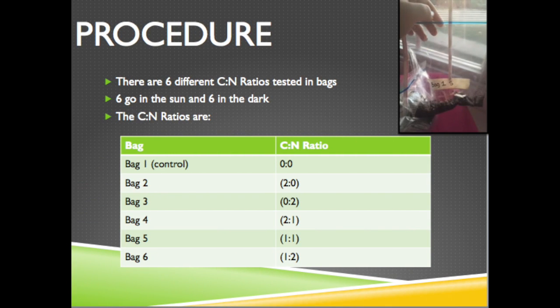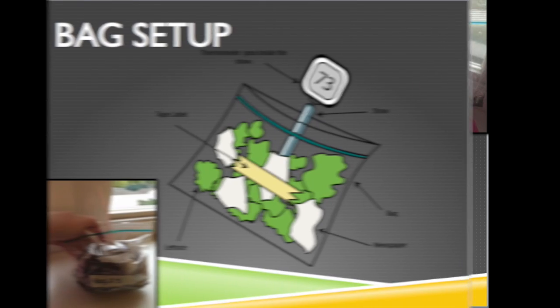In this experiment, I had six bags, all filled with different C:N ratios. Bag 1 was 0 to 0 and it was the control. Bag 2 was 2 to 0. Bag 3 was 0 to 2. Bag 4 was 2 to 1. Bag 5 was 1 to 1. And Bag 6 was 1 to 2. Six of these bags go in the sun, and six go in the dark.